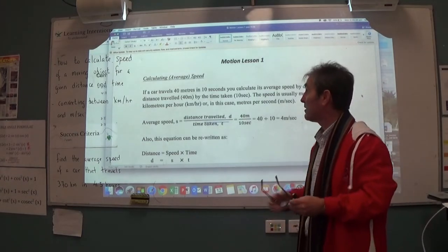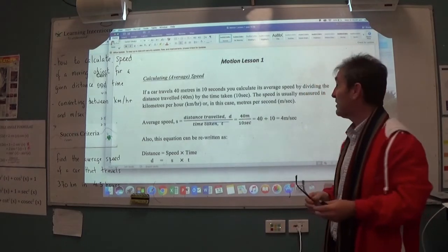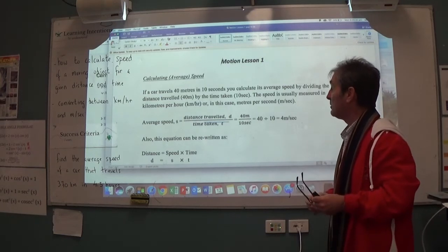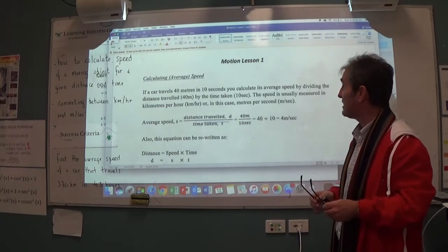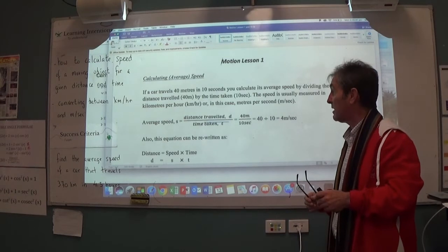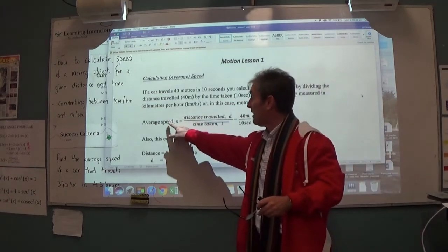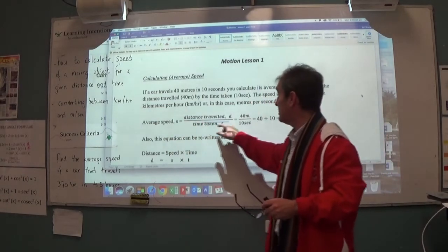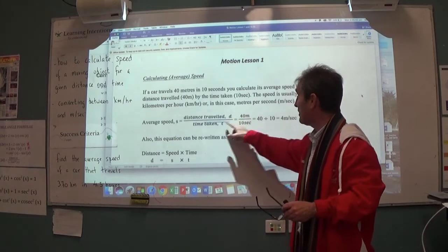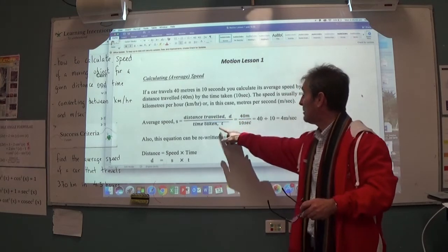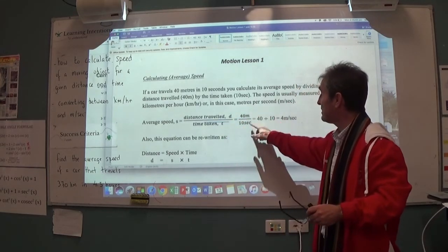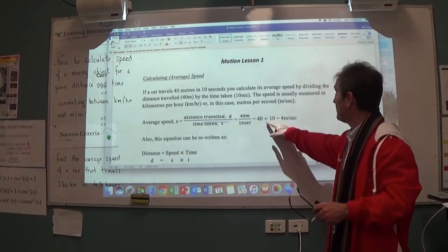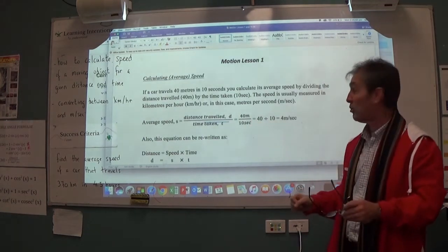So just to explain, you can take your time to read through here. When calculating average speed, as an example, let's say a car travels 40 metres in 10 seconds and you want to find its average speed. As a general rule, to find the speed S, it's the distance travelled D divided by the time taken T. In this case, 40 metres divided by 10 seconds. 40 divided by 10, its average speed is 4 metres per second.